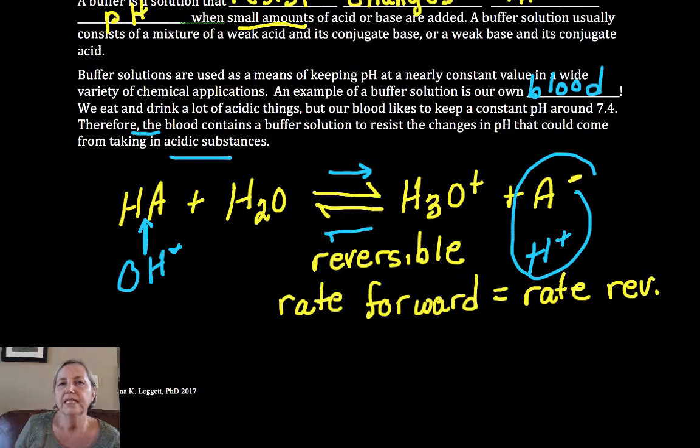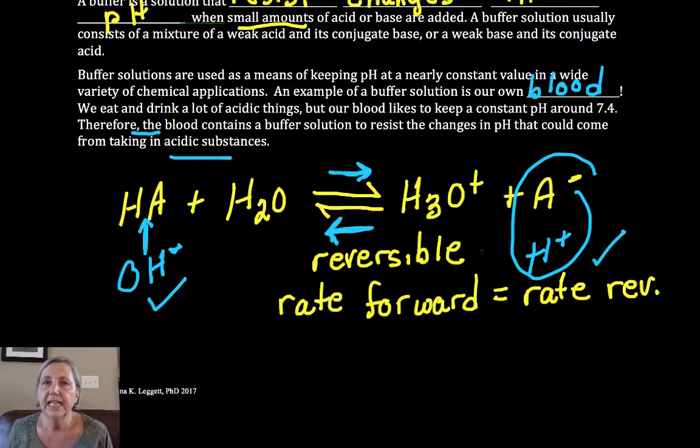So that's just the gist of a buffer - a buffer has the ability to shift to make more product or shift to make more reactant in response to the addition of small amounts of a base or an acid in order to keep a relatively constant pH.